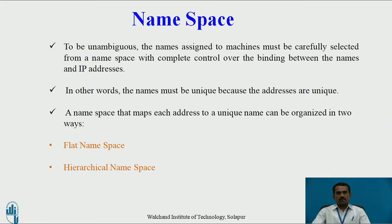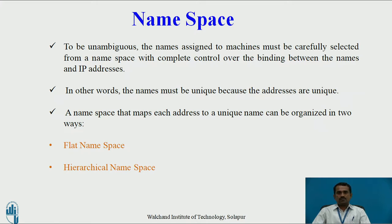Now, Namespace. To be unambiguous, the names assigned to machines must be carefully selected from a namespace, with complete control over the binding between the names and IP addresses. In other words, the names must be unique because the addresses are unique. The namespace that maps each address to a unique name can be organized in two ways: flat namespace and hierarchical namespace.